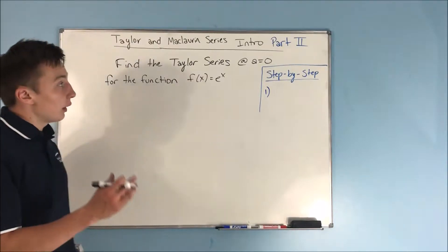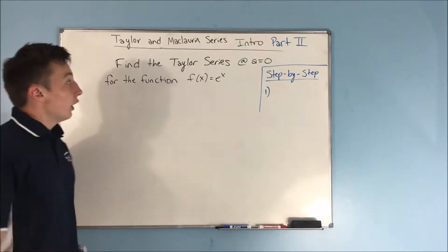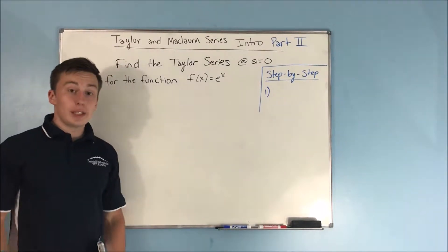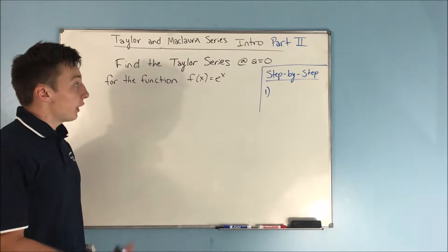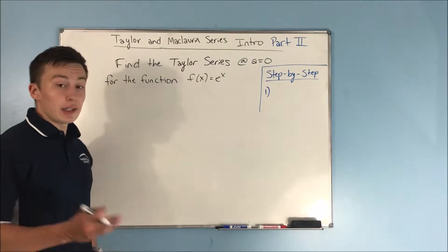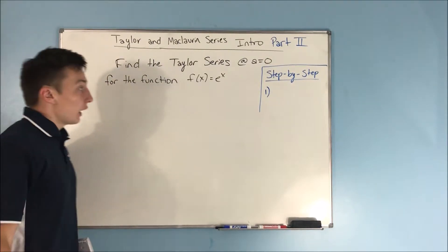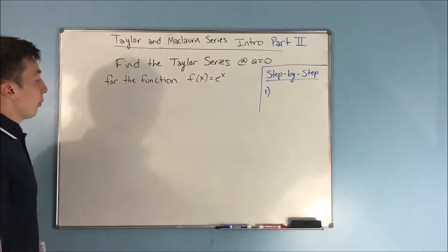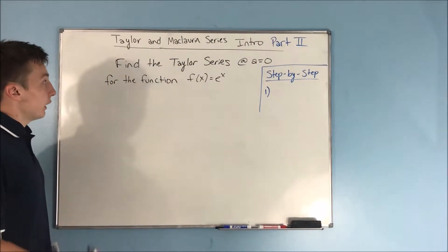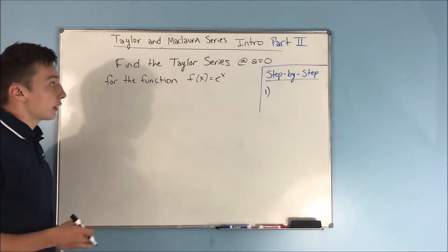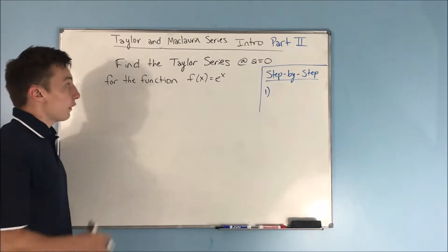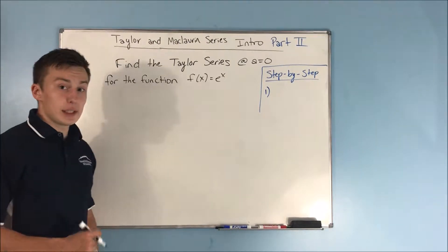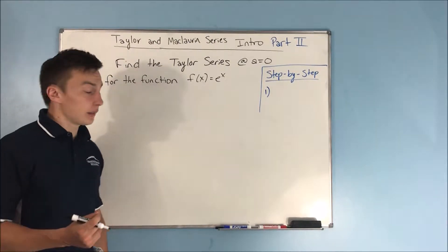Alright, so this video is going to be part 2 of our intro to Taylor and Maclaurin series. So now we're going to actually be doing an example with this, and that problem right here is: find the Taylor series at a equals 0 for the function f of x equals e to the x.